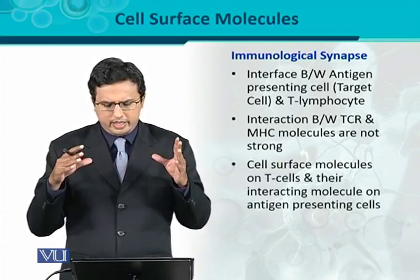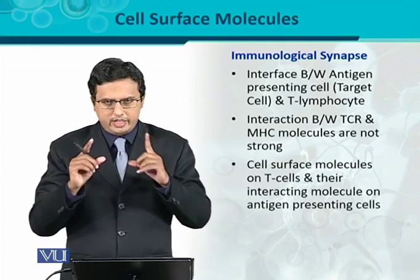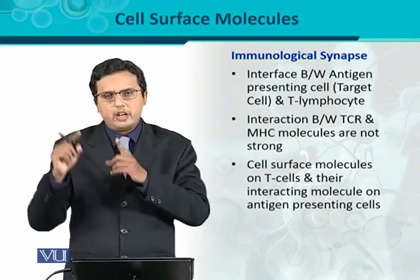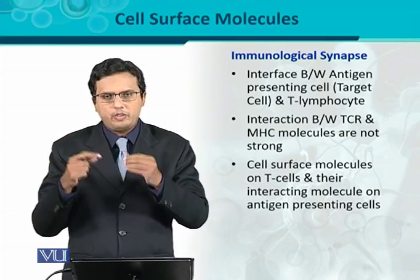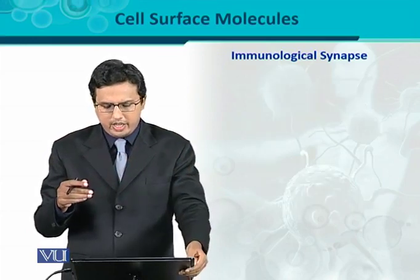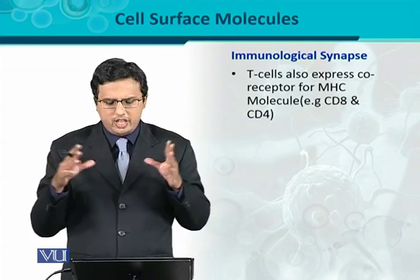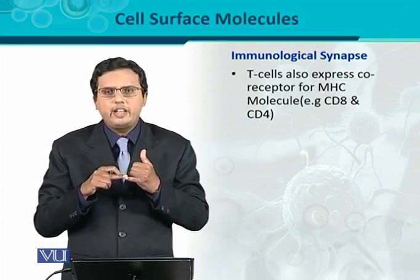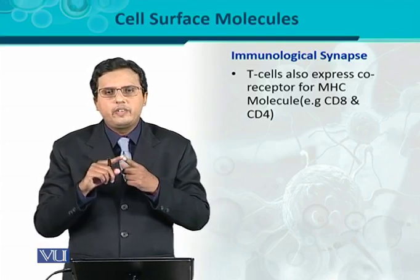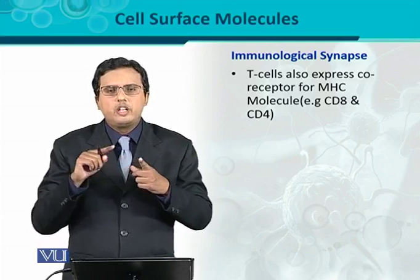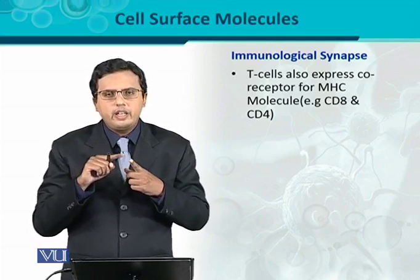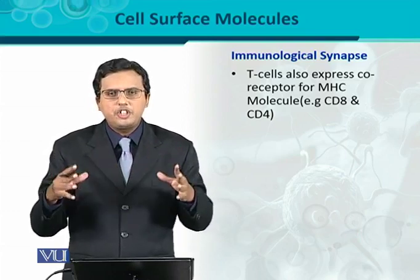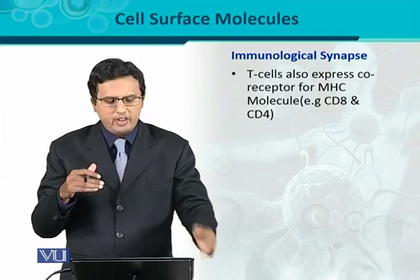The cell surface molecules of the T-cells and their interacting molecules on the antigen-presenting cells — T-cells also express co-receptors. In the immunological synapse, some co-receptors are present. There are two different varieties of T-cells: cytotoxic T-cells and helper T-cells. Cytotoxic T-cells have the co-receptor CD8, and helper T-cells have the co-receptor CD4. According to the variety or nature of the T-cells, these co-receptors are present on the T-cell surface.